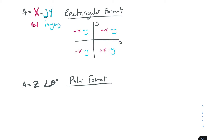The key thing to remember about rectangular format is we use it for adding and subtracting. When you're dealing with AC voltages or currents and you want to add or subtract them, you do that in rectangular format. If they're in a different format — for example polar — you would convert to rectangular first, add or subtract, then convert back if needed.